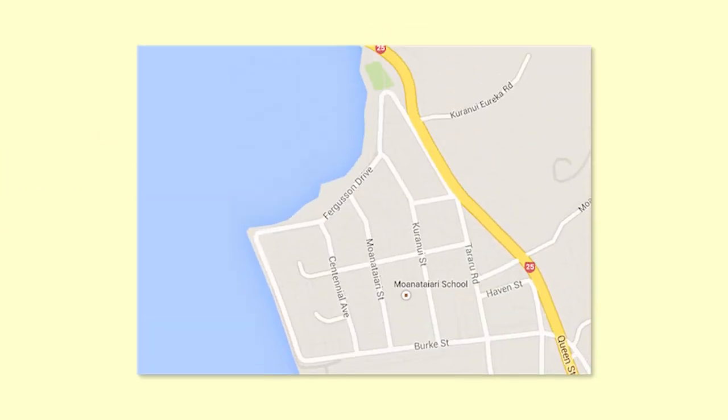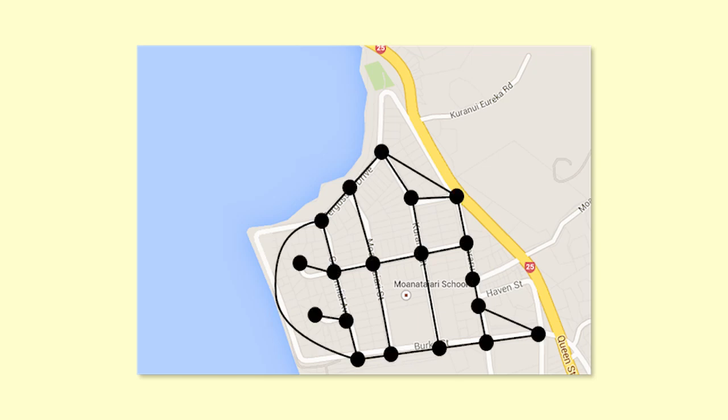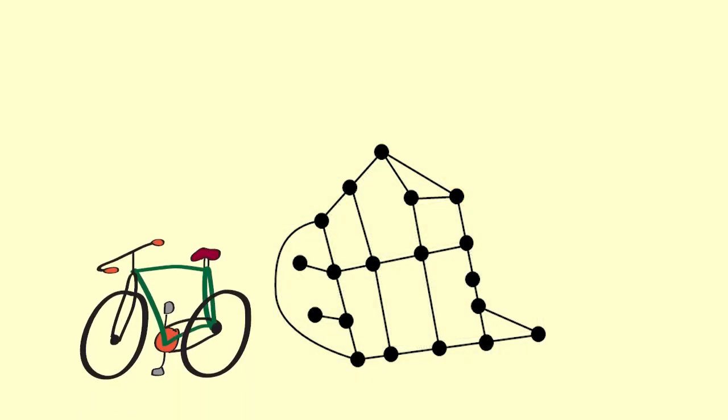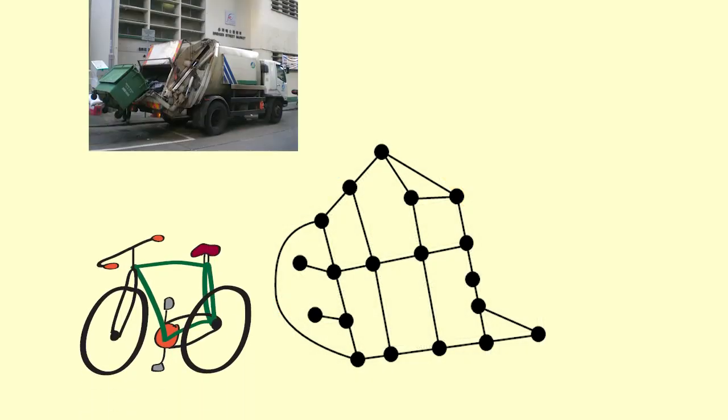We might make a network model of a town or suburb. This could be used by a maps app to find a route or by a city council to work out where to put cycle lanes or the route for bin collection trucks.